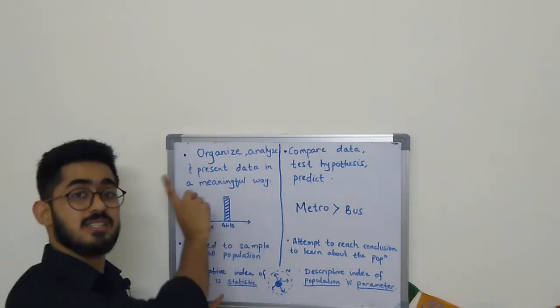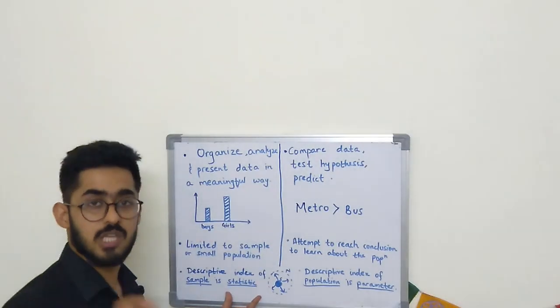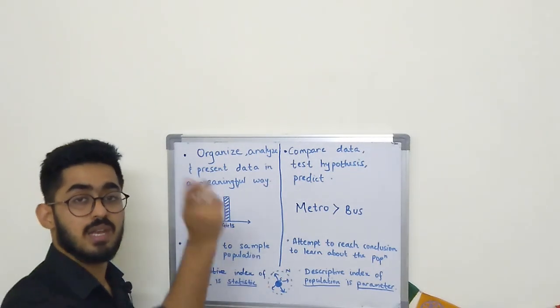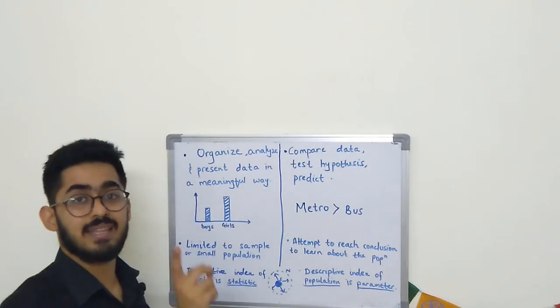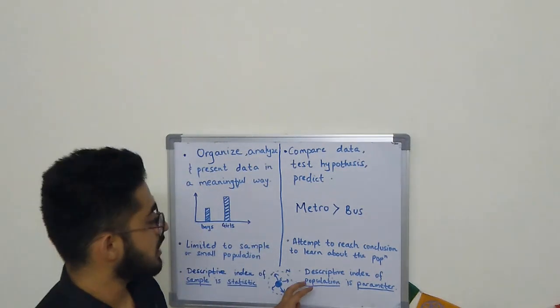Don't confuse this with the statistics we read about first. Statistics in this term is singular, whereas the statistics we learned before—the science—was plural.